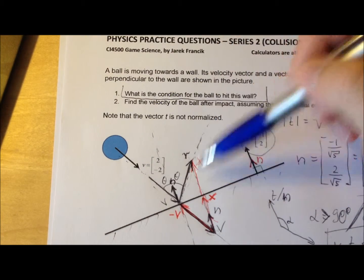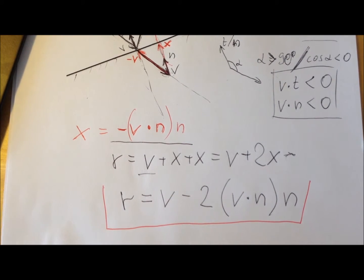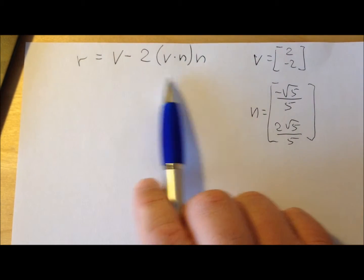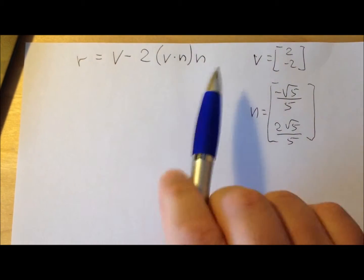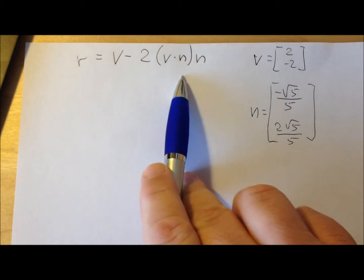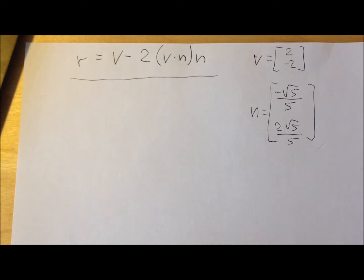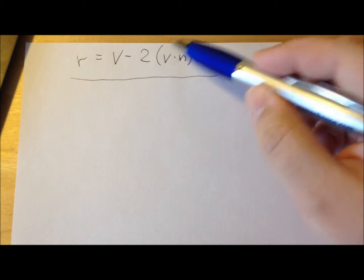During the in-class test, you can simply assume you have this formula and don't have to demonstrate how to derive it. Now I will input the data — the velocity vector and the normal vector — and demonstrate how to make this calculation. Note that the dot here symbolizes the dot product calculation, which produces a number, and N is a vector.